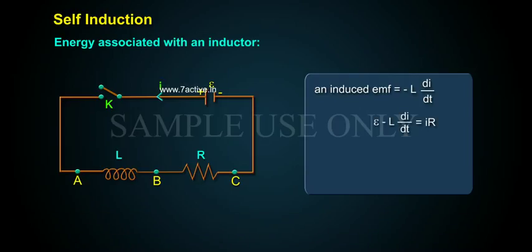then epsilon minus L DI by DT equals IR, epsilon I equals IR plus L DI by DT.